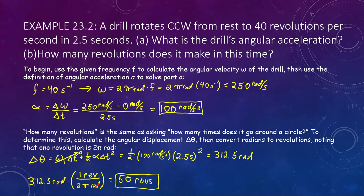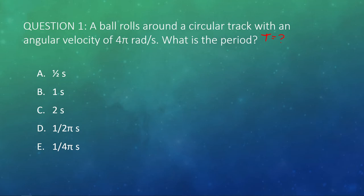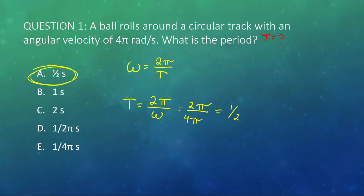To close out this lecture, let's do a few end-of-lecture questions. A ball rolls around a circular track with an angular velocity of 4π radians per second. What would the period T be? We need the relationship between angular velocity and period: omega equals 2π over T, so T equals 2π over omega. That's 2π divided by 4π, which equals one half. The answer is half a second.